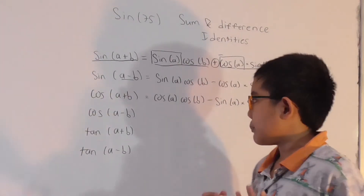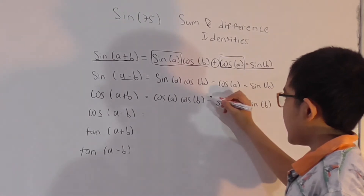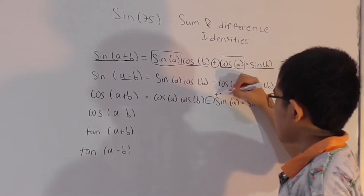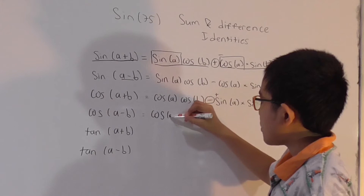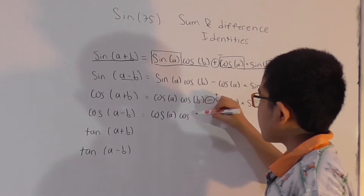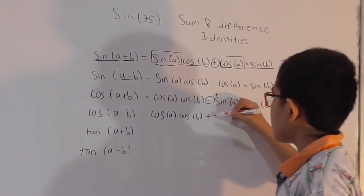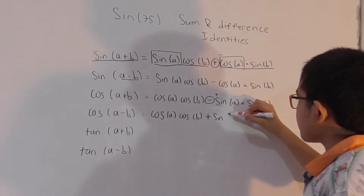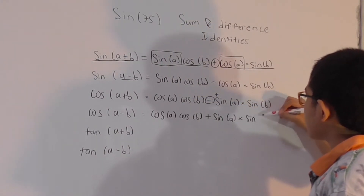For cosine of (A-B), we take the cosine of (A+B) equation and change the minus into plus. So it becomes: cosine A times cosine B, plus sine A times sine B.